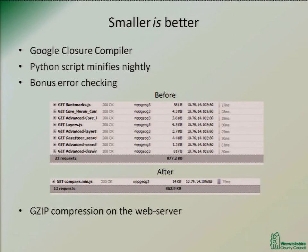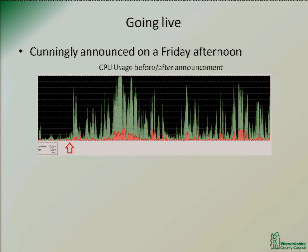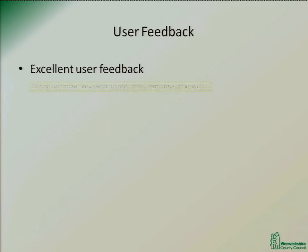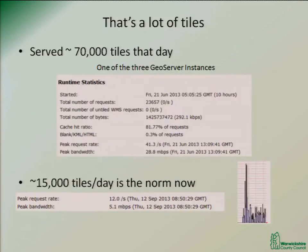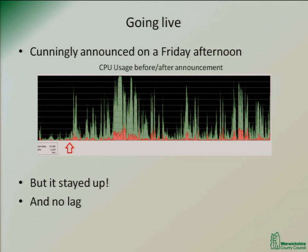We went live cunningly on a Friday afternoon — the idea was to spread the load, so half the council would do it Friday afternoon and the other half would log in Monday morning. As you can see, the email went out and a few seconds later half the authorities were on it because they've got nothing else to do on a Friday afternoon. It's an eight-core CPU and you can see they kind of hammered it, but it stayed up.